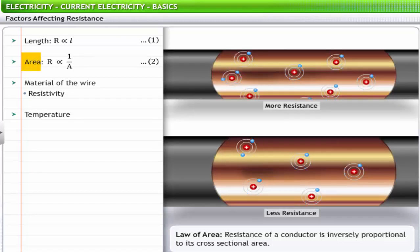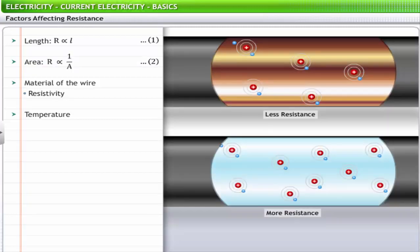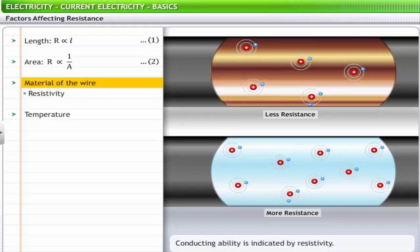Secondly, the resistance of a conductor is inversely proportional to its cross-sectional area. Larger the area of the conductor, lesser the resistance of it. This relationship between resistance and the area of a conductor is termed as the law of area.